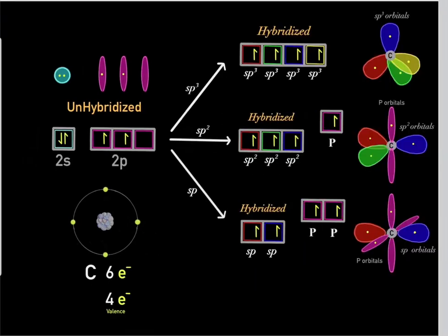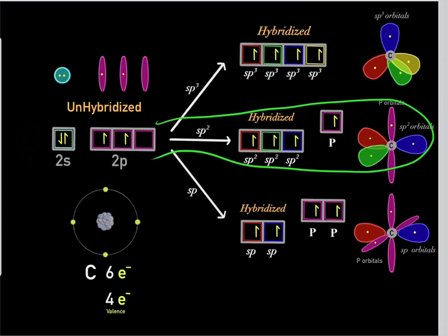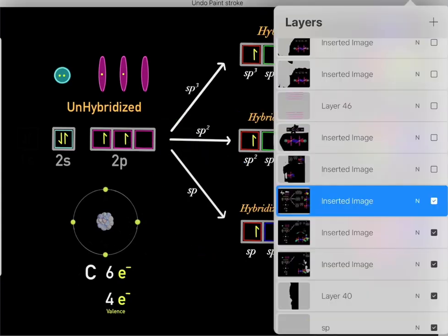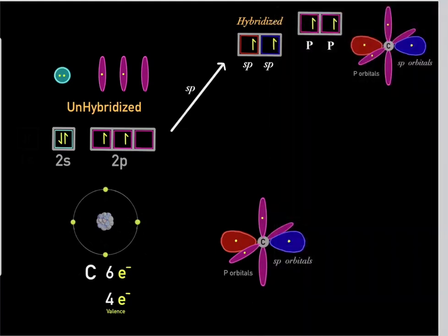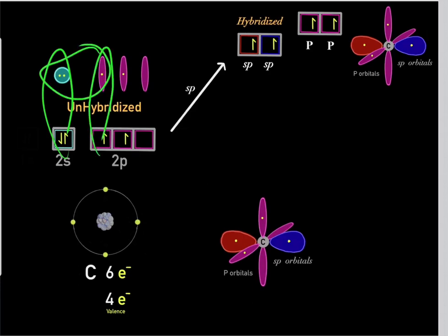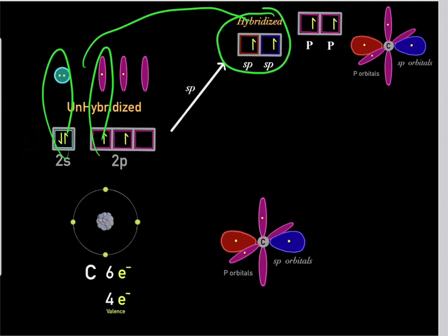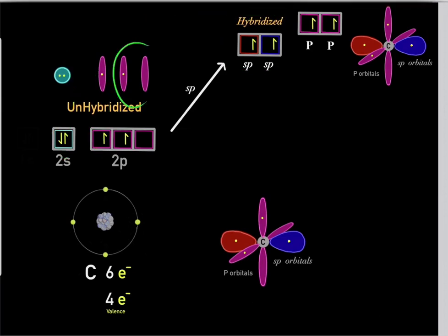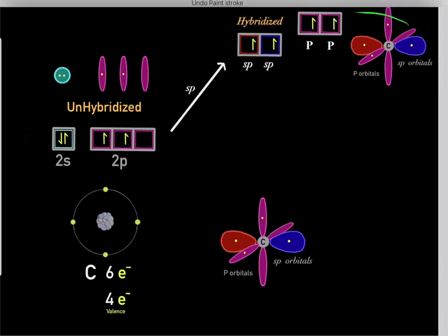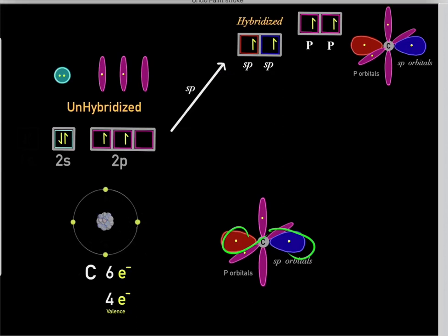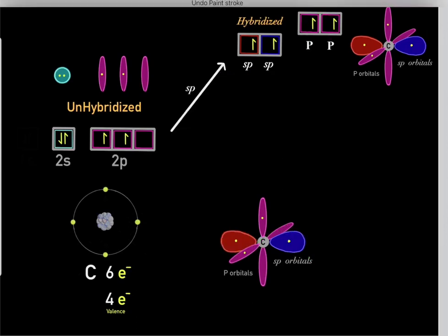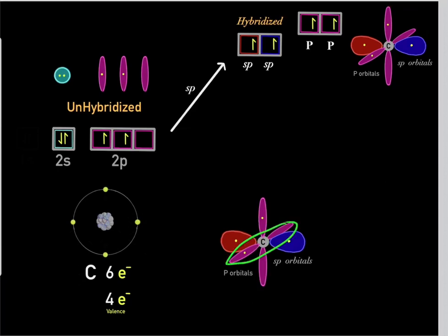We've learned about sp3 and sp2 hybridization. Now, what happens when we go through sp hybridization? We take one s orbital and one p orbital and fuse them to form two sp hybridized orbitals. Therefore, we're left with two unhybridized p orbitals. An sp hybridized atom has two sp orbitals and two unhybridized p orbitals.